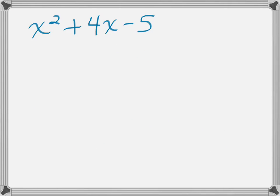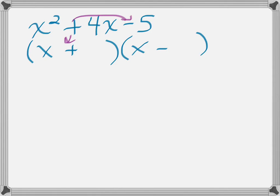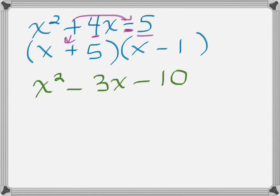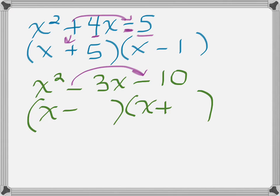Here's another example where the constant is subtracted. Two binomials, x and x. Bring down our first term of positive. Positive times a negative gives a negative. Now we're looking for two numbers that multiply to give 5 that when subtracted give 4 — that's 5 and 1. Here's another example: two binomials, x and x. Bring down the first term. A negative times a negative is a positive. We look for two numbers that multiply to give 10 and when subtracted give 3 — that's 5 and 2.